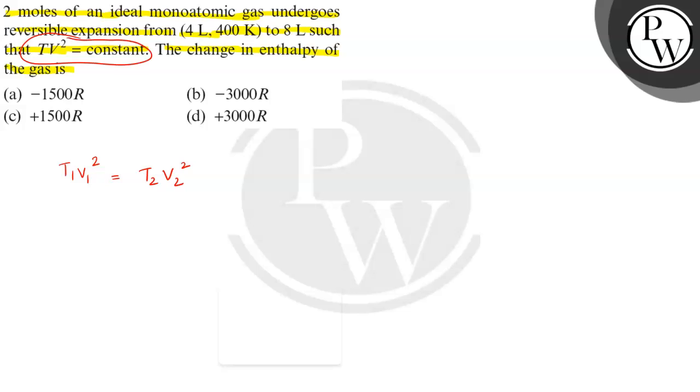From this equation, T2 is equal to T1 times V1 by V2 whole square. That is equal to, T1 is 400 Kelvin.